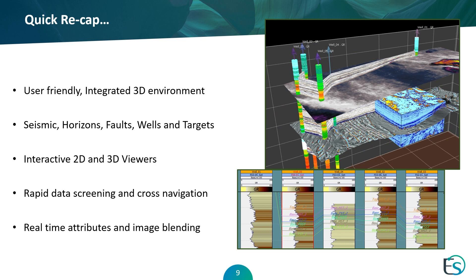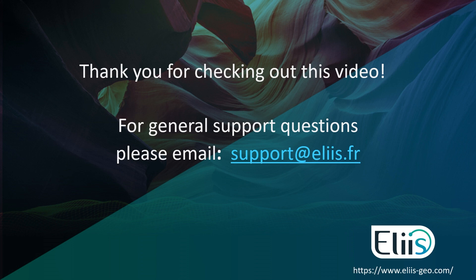To recap: PaleoScan is both a 2D and 3D visualization interpretation software that allows for the use of all different types of geologic data — seismic horizons, faults, wells. The interactivity between the 2D and 3D windows using the cross-navigation tool is one of the things we're very proud of that helps us stand out amongst many other competitors. We showed you how to use and manipulate your real-time attributes and the color blending from both your 2D and 3D windows. We're going to continue these video series — this was just the overall preview, so come back for more videos on each of these individual topics that will go in depth to show you how to create and manipulate all of these different data types within the software and build your own projects within PaleoScan.